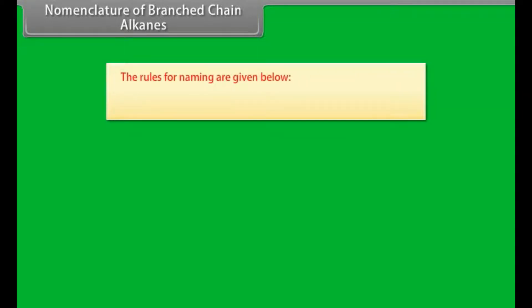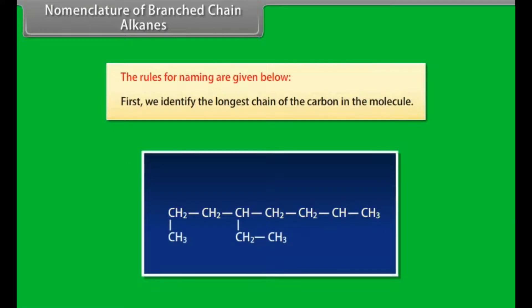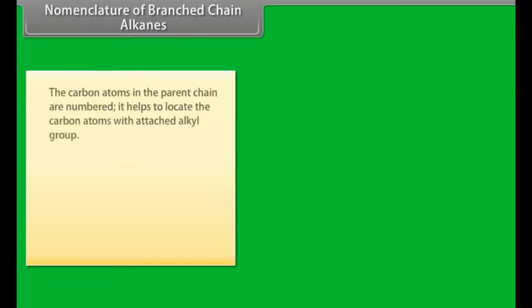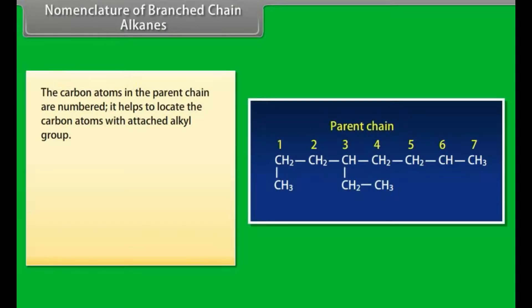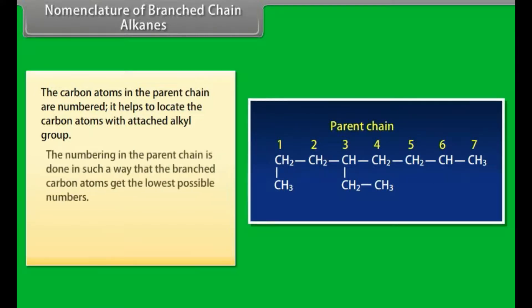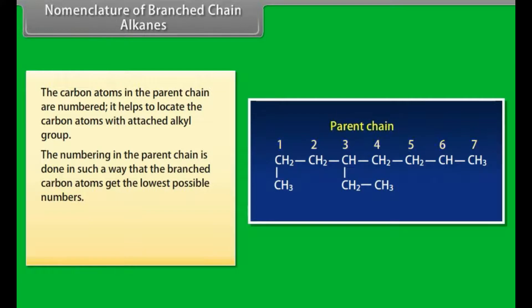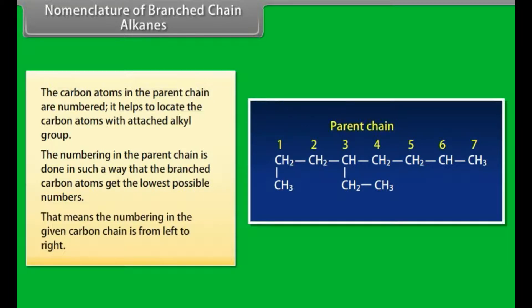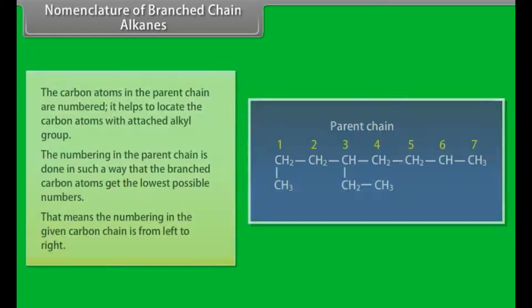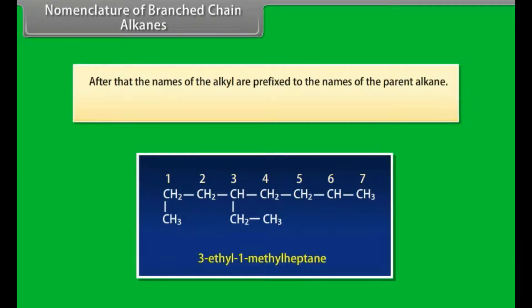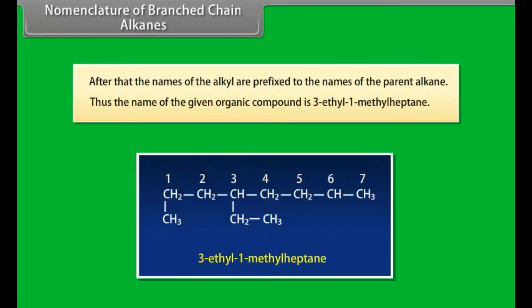Nomenclature of branched chain alkanes: first, identify the longest chain of carbons in the molecule. The carbon atoms in the parent chain are numbered to locate the carbon atoms with attached alkyl groups. The numbering is done such that the branched carbon atoms get the lowest possible numbers, meaning numbering from left to right. The names of the alkyl groups are then prefixed to the name of the parent alkane. For example, the name of the compound is 3-ethyl-1-methyl-heptane.